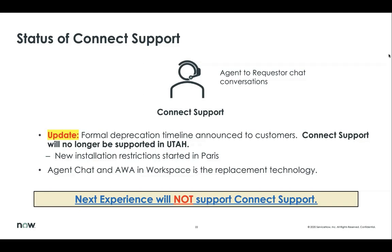One of the best alternate technologies is agent chat and advanced work assignment, which does much more than Connect support. Please do take a look at agent chat and AWA and their capabilities — useful resources will be attached to the bottom of this video on YouTube. Connect support is not supported by next experience. If any customers are still using Connect support and Connect Chat, there will be some workaround options, but as a best practice it is always best to migrate to agent chat and advanced work assignment.